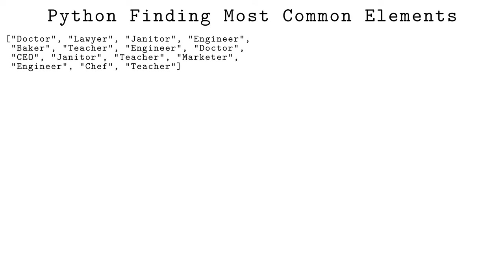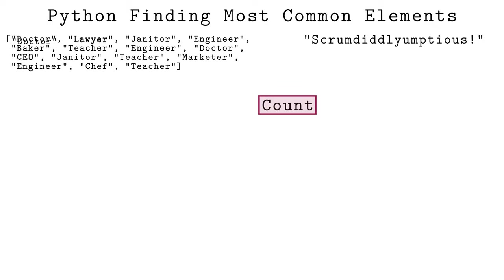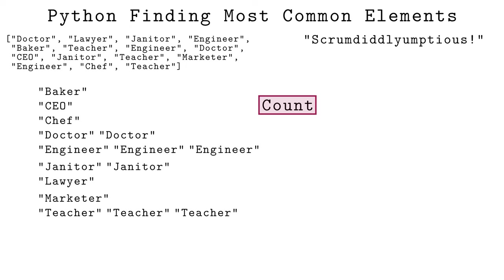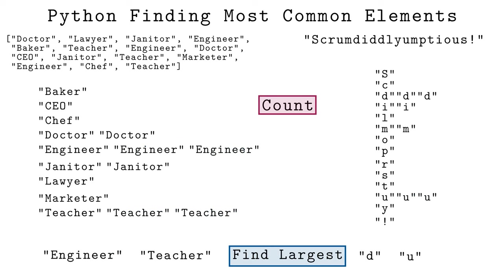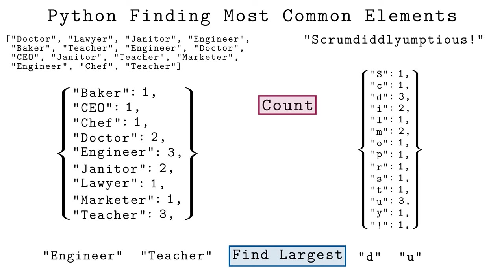What are the most common occupations in this list? What are the most common letters in the string 'scrumdiddlyumptious'? These types of questions come up frequently in data analytics applications, but how can we have a computer efficiently calculate the answer? One trick is to break the problem into two smaller steps: counting how often each item appears, and then finding the largest count and the associated items. A dictionary is very helpful in the first step, and a list allows us to handle ties in the second step.